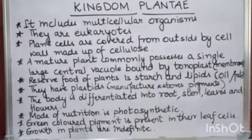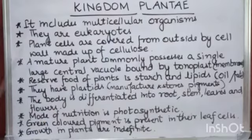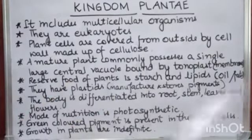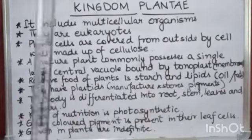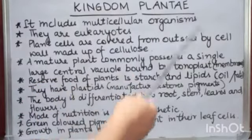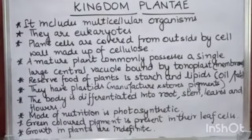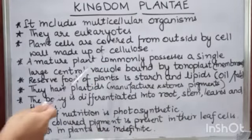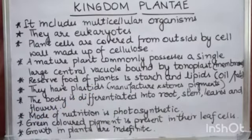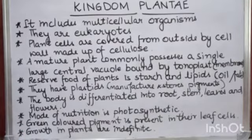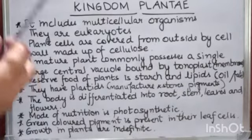Kingdom Plantae includes all types of plants. Some characteristic features are: first, it includes multicellular organisms — organisms having many cells. They are eukaryotes, meaning they have a well-defined nucleus. Plant cells are covered from the outside by a cell wall made up of cellulose. The cell wall is a characteristic feature of plant cells — animal cells do not have a cell wall.